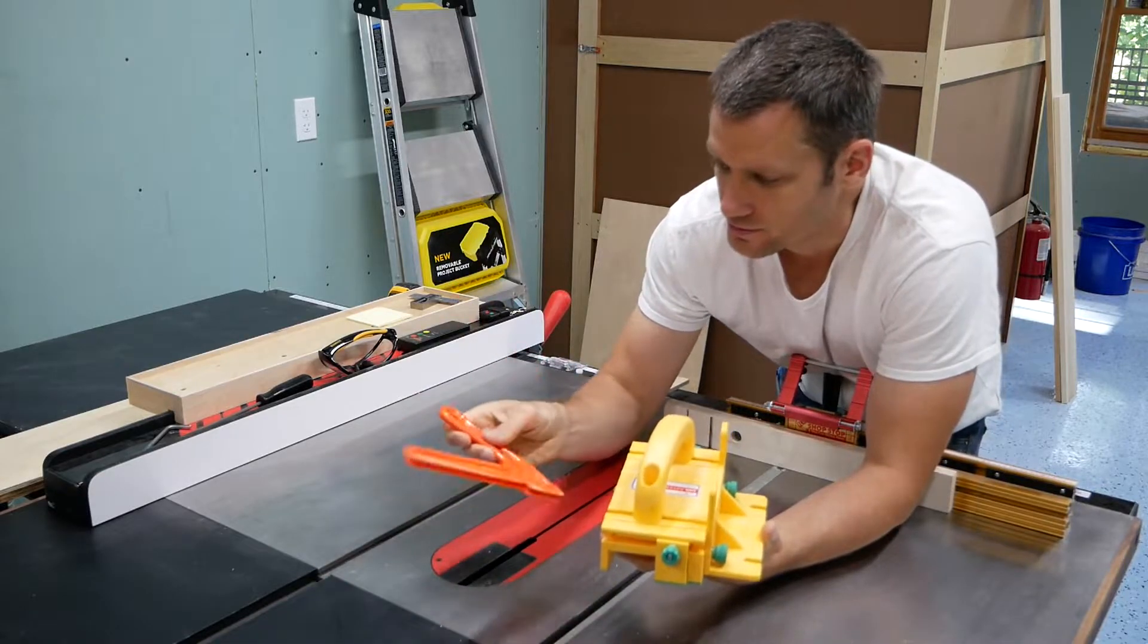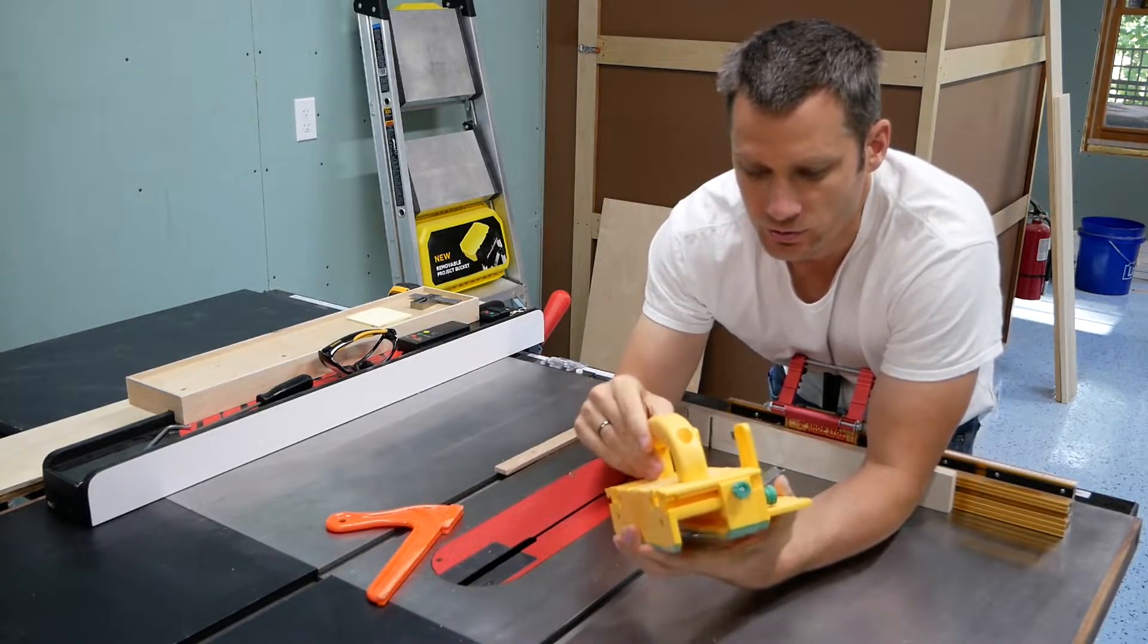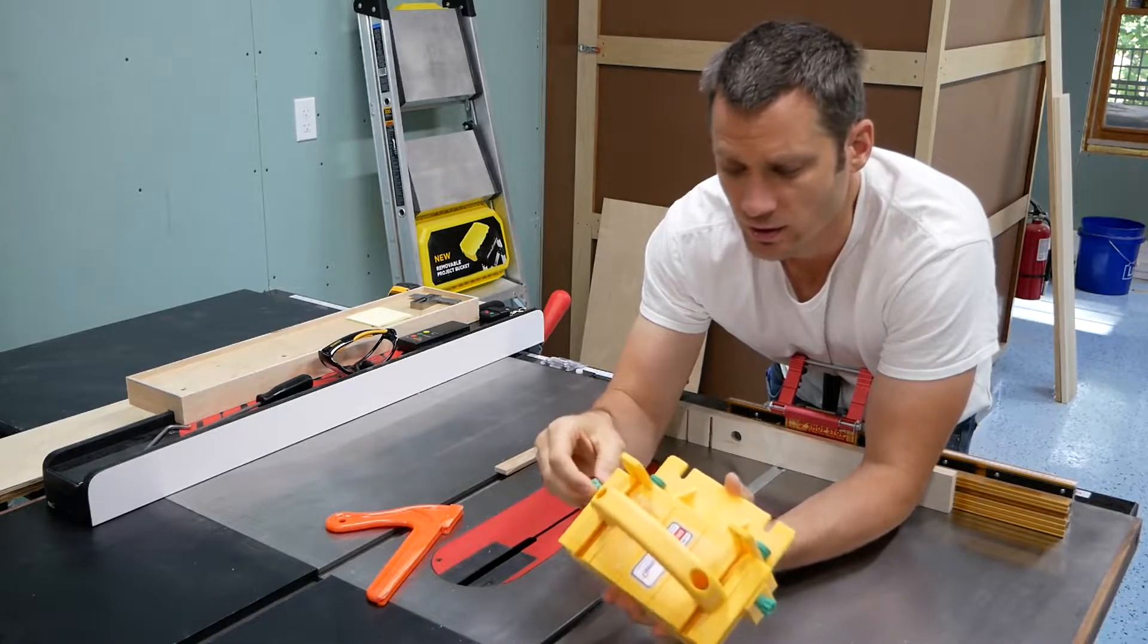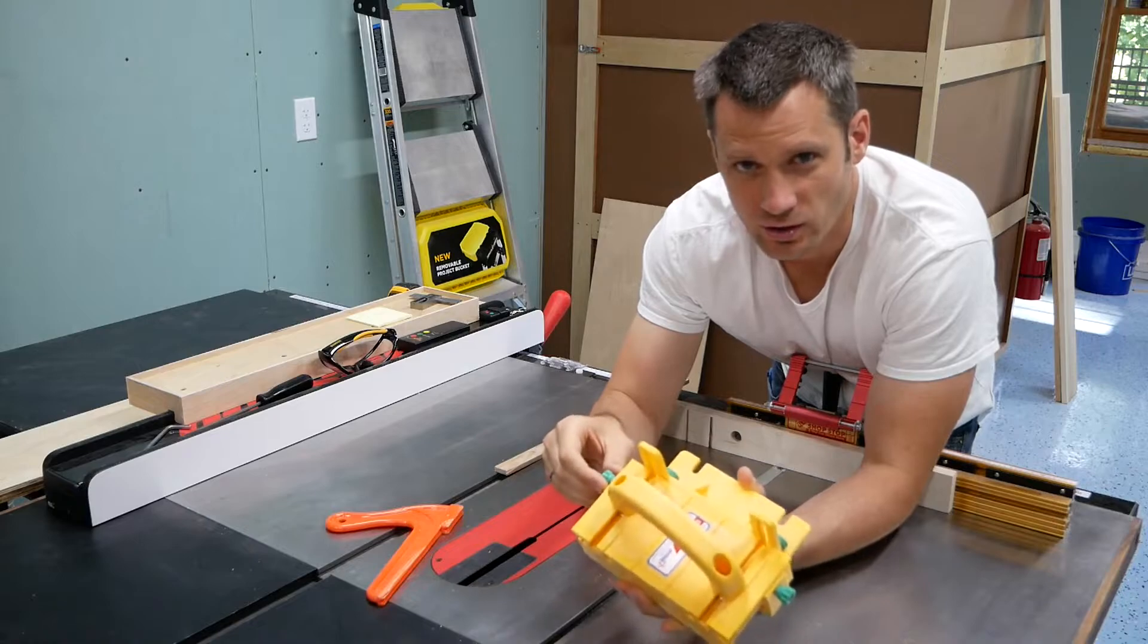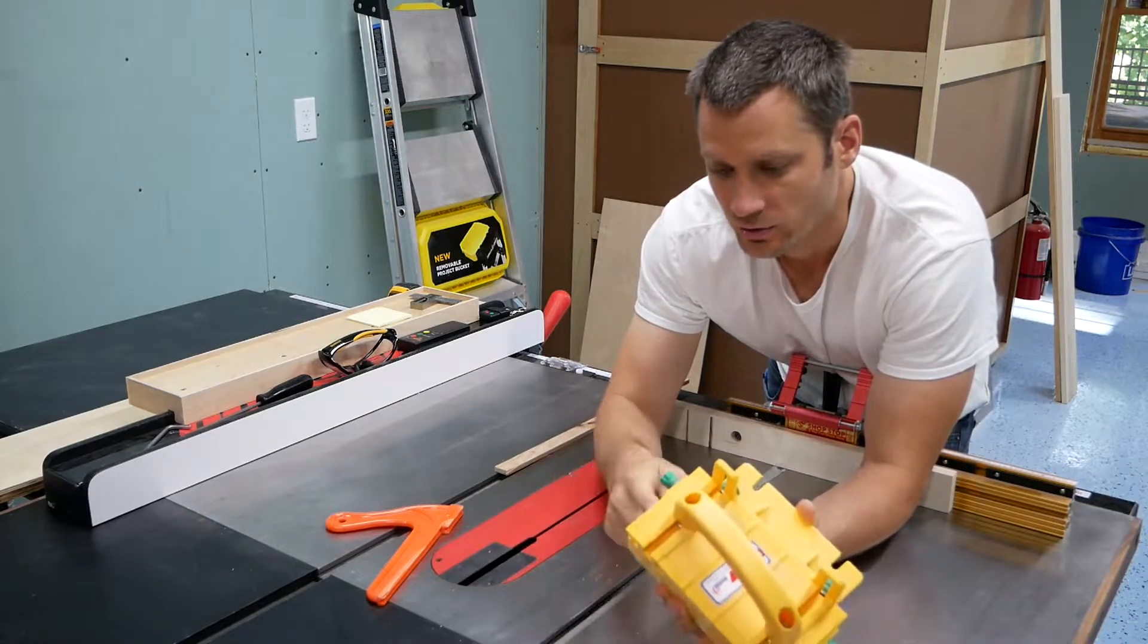But I'd like to get rid of this. This is kind of cheap. I was thinking about making one and I looked online. For $15, Microjig does have these—I think they call them gravity heels—that hook in the back here.